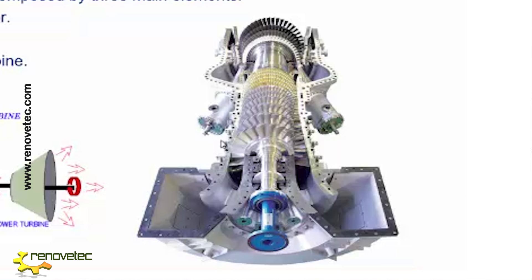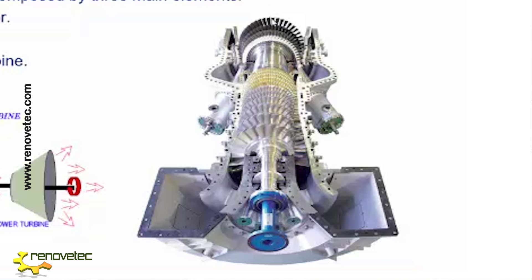This air increases its temperature with the help of the combustor — this is the combustion chamber. The second element of the gas turbine is the combustion chamber, where we increase the temperature of the air. After that, the third element is the expansion turbine, where the pressure is released. The decompression produces mechanical energy in the shaft, which is then converted into electrical energy with the help of a generator.